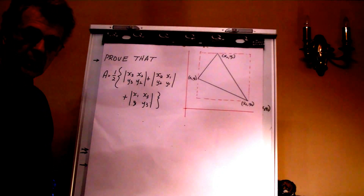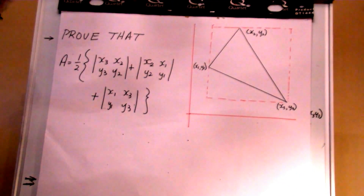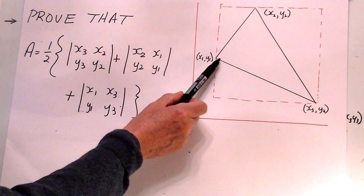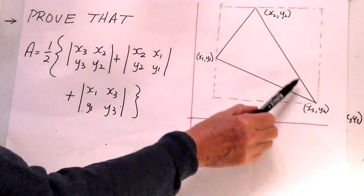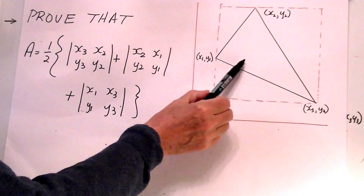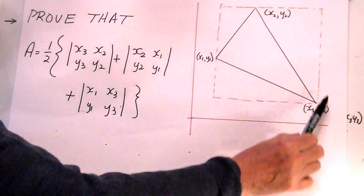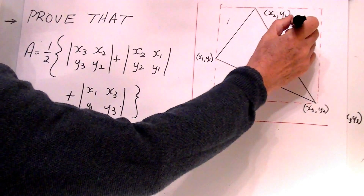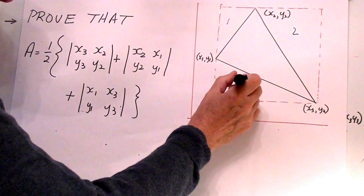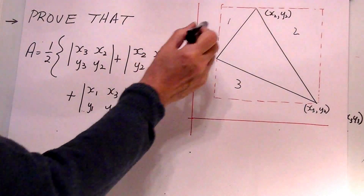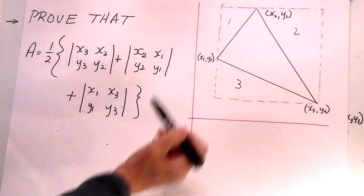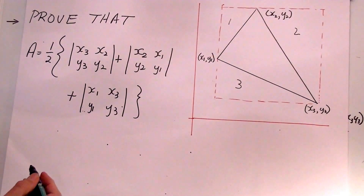I'll just zoom this in a little bit so you can get a closer look. Here we have the triangle and its various coordinates. To calculate this area, you need to find the area of the rectangle, and then take areas one, two, and three — the various sub-triangles — and subtract them from the rectangle, which will leave us with the area of the triangle we want.